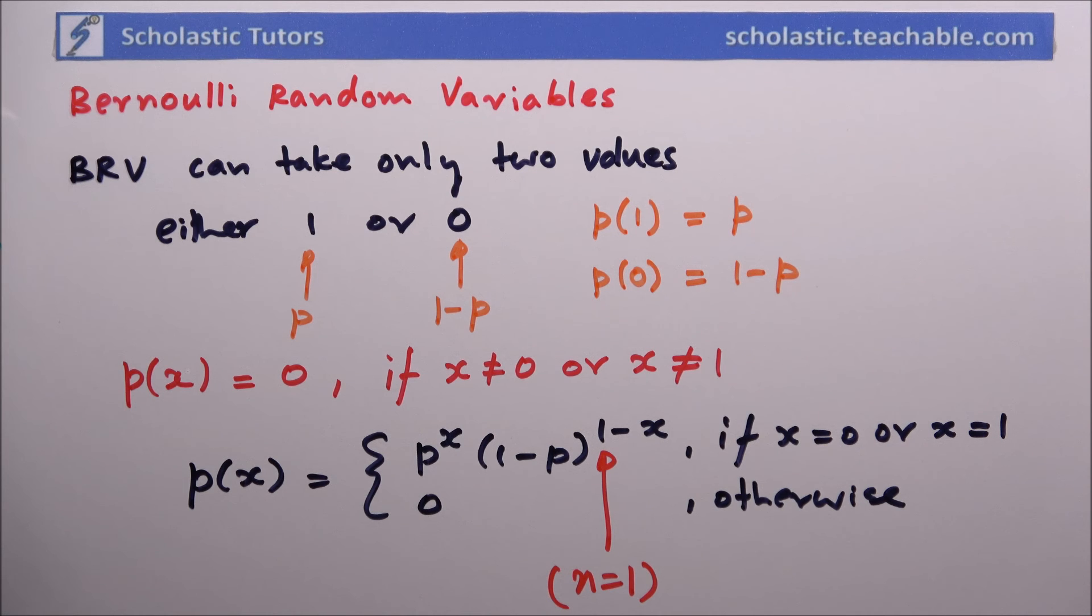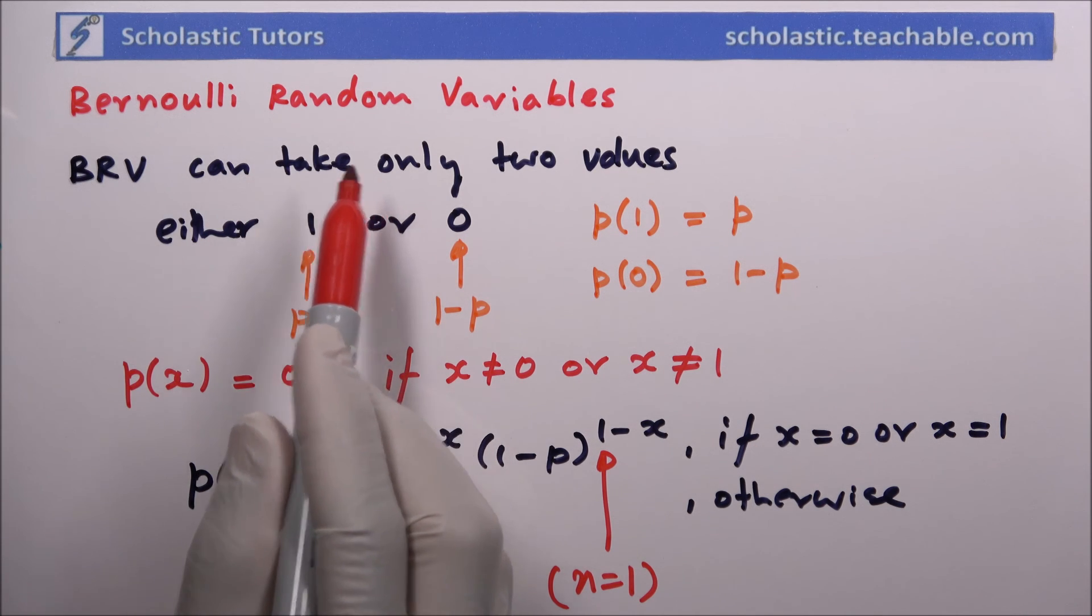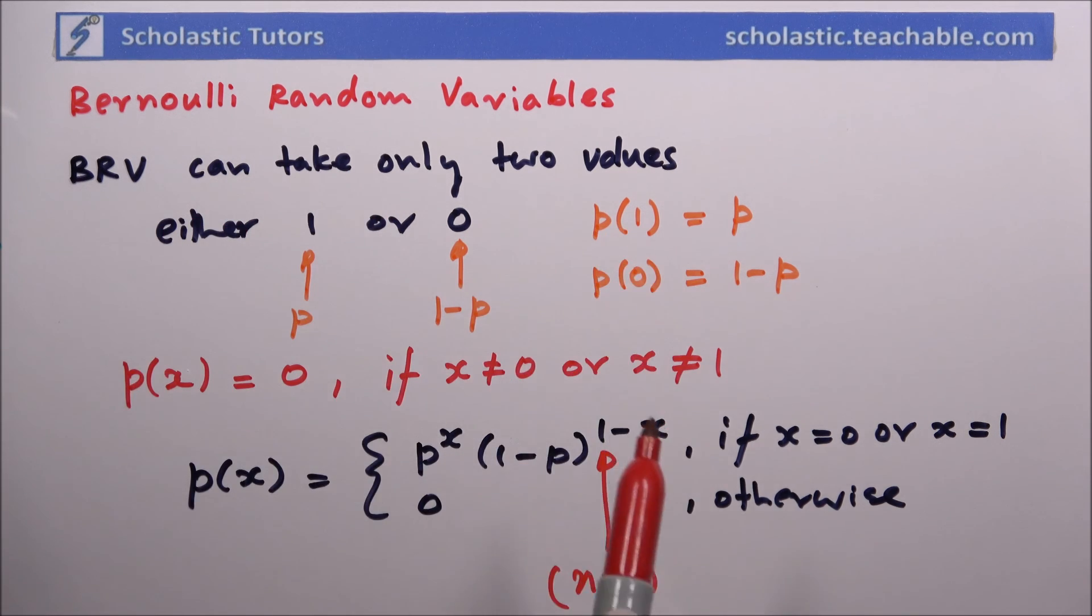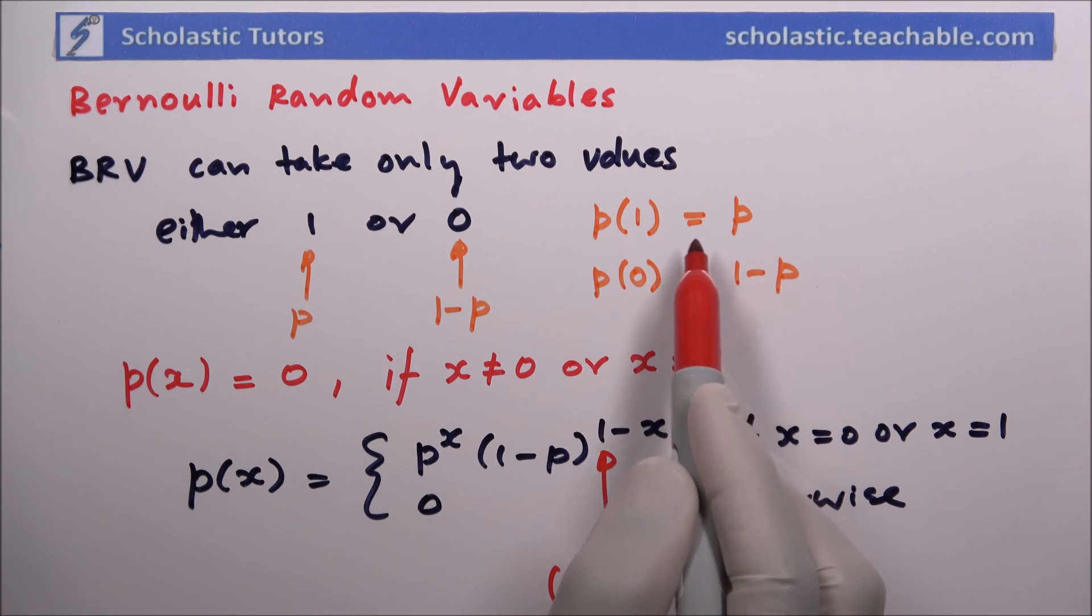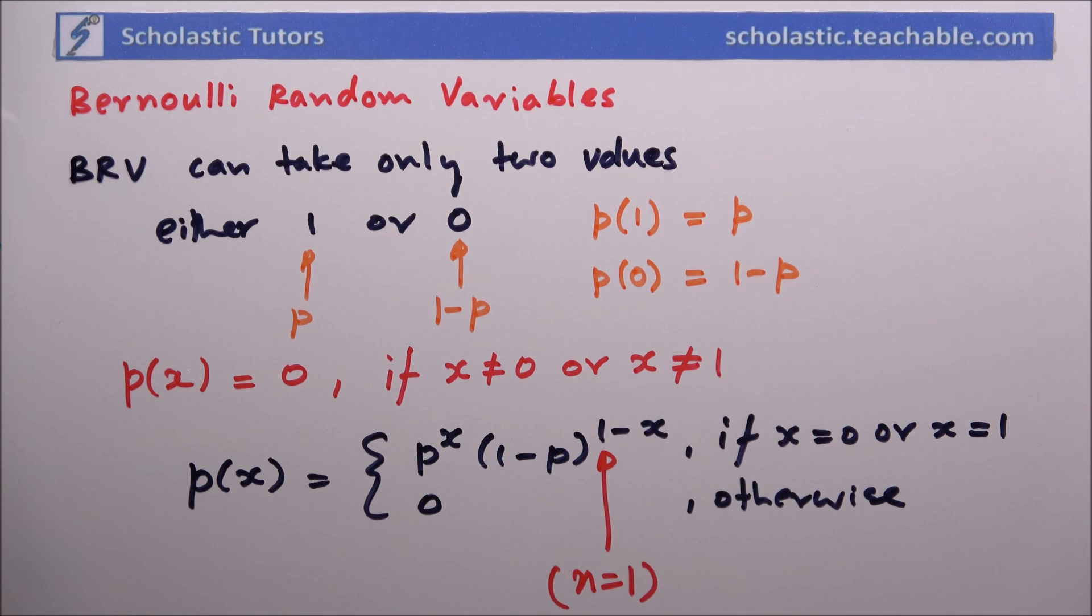In this video, we looked at Bernoulli random variable, which can take only two values: either one or zero. The probability of the occurrence of one is p, and the probability of occurrence of zero is one minus p. Thank you.